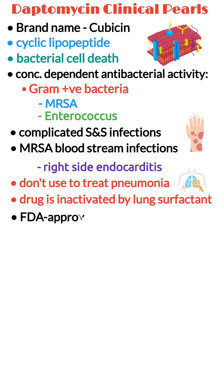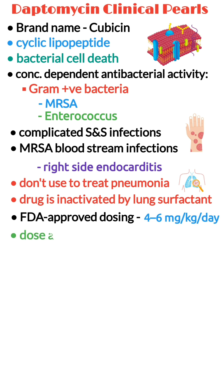FDA-approved dosing of daptomycin is 4 to 6 mg per kg per day. Dose adjustment is needed in cases of renal impairment.